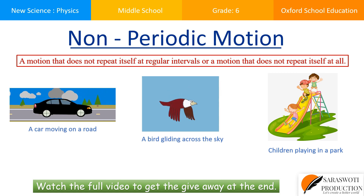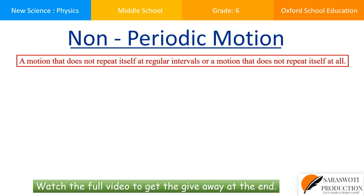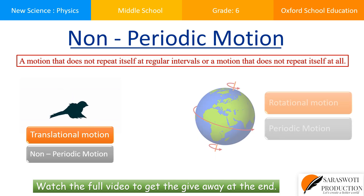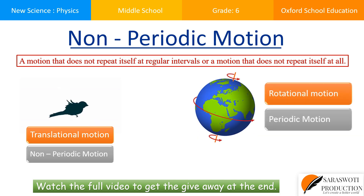In everyday life we observe more than one type of motion. For example, birds gliding across the sky exhibit translational and non-periodic motion, while rotation of the earth on its axis is both rotational and periodic.